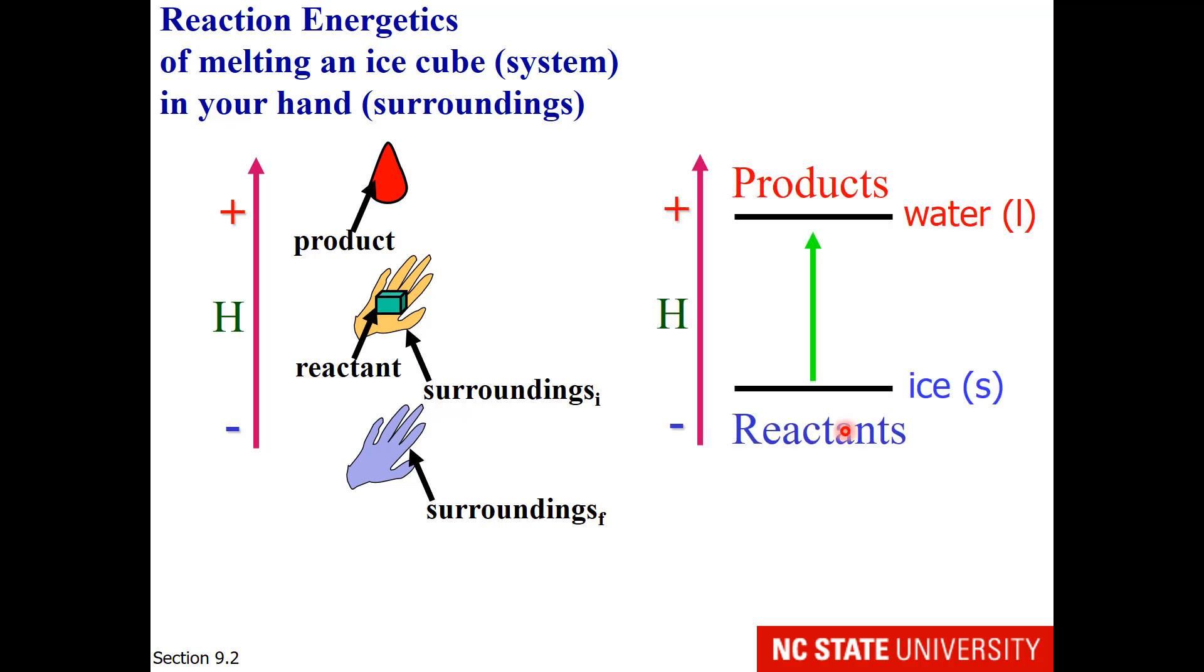So the heat change from reactant to product is upward. If we take the enthalpy change, we're taking the heat of higher energy products minus the heat of lower energy reactants. This will result in a positive enthalpy change. So this is endothermic.